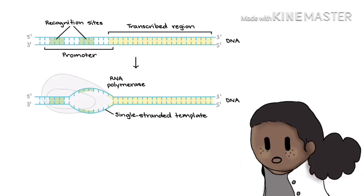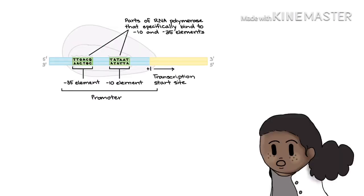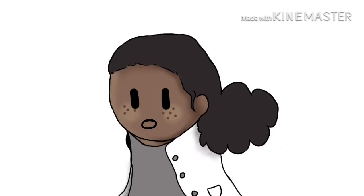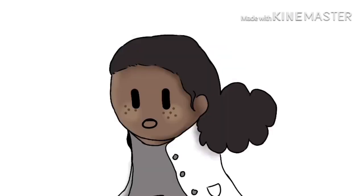First is transcription initiation. To begin transcribing a gene, RNA polymerase binds to the DNA at the gene at a region called the promoter. Basically, the promoter tells the polymerase where to sit down on the DNA and begin transcribing. Each gene has its own promoter. A promoter contains DNA sequences that let RNA polymerase or its helper proteins attach to the DNA. Once the transcription bubble has formed, the polymerase can start transcribing.